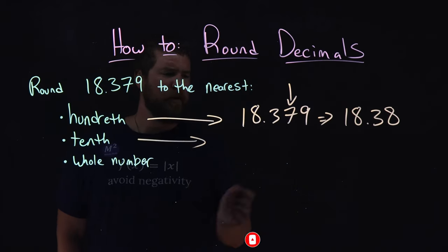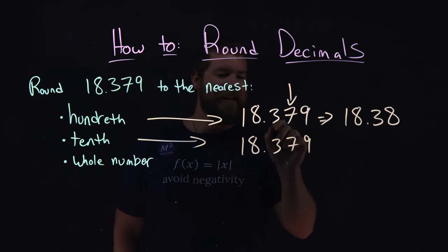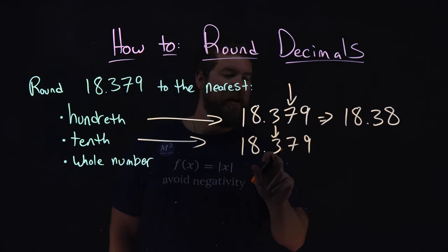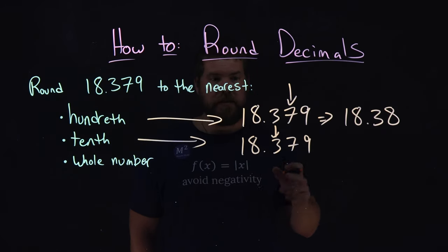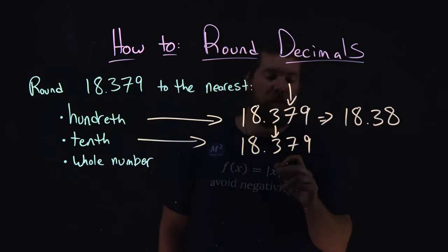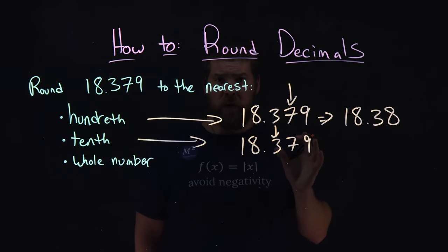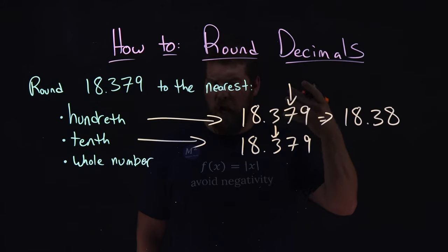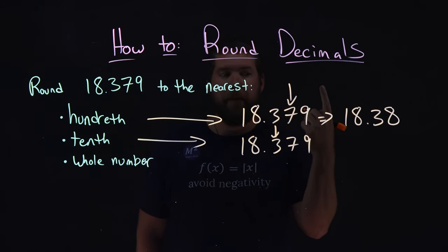Now, what about tenth? Well, same thing here. We have 18.379. Let's look at the tenth right here. That's the 3. So, we look at the 3 and we follow the same process. To the right of the 3, we see a 7. 7 is in a category of 5 through 9, 5 and up. And so, that causes this 3 to round up.